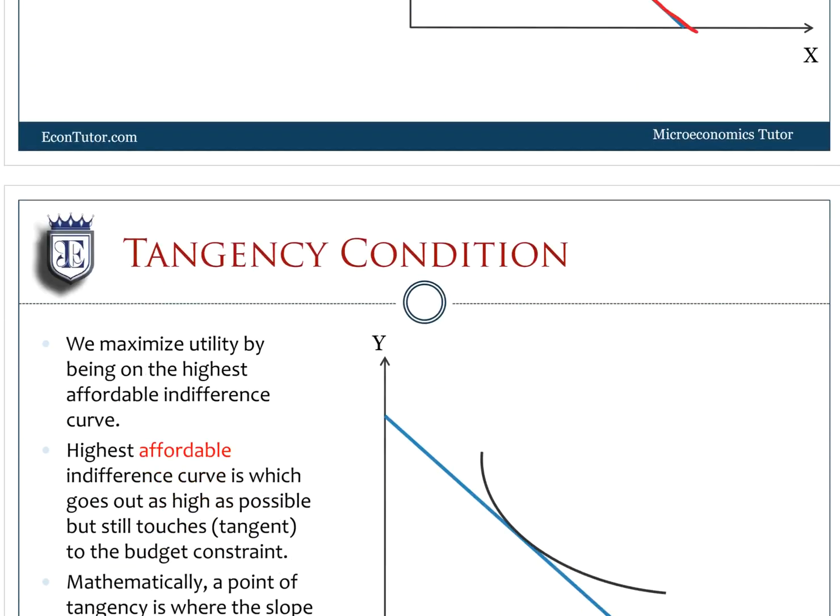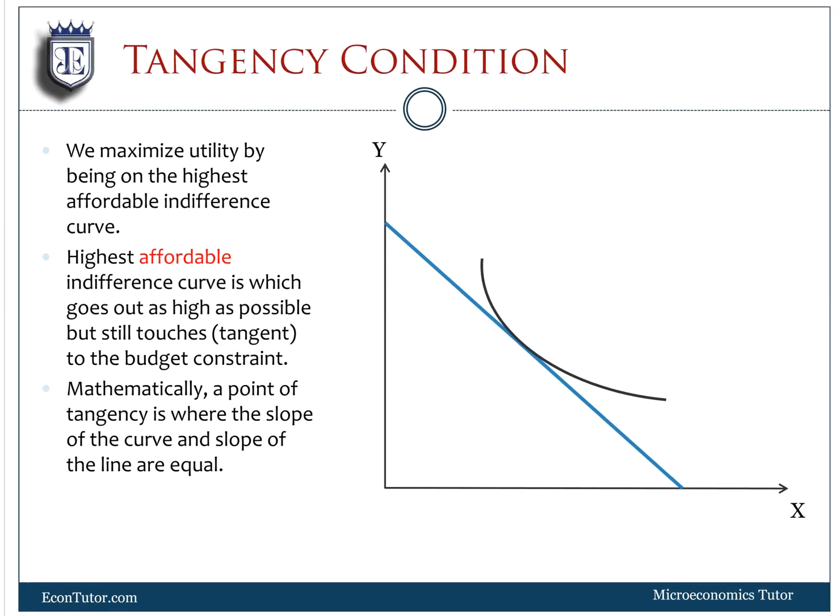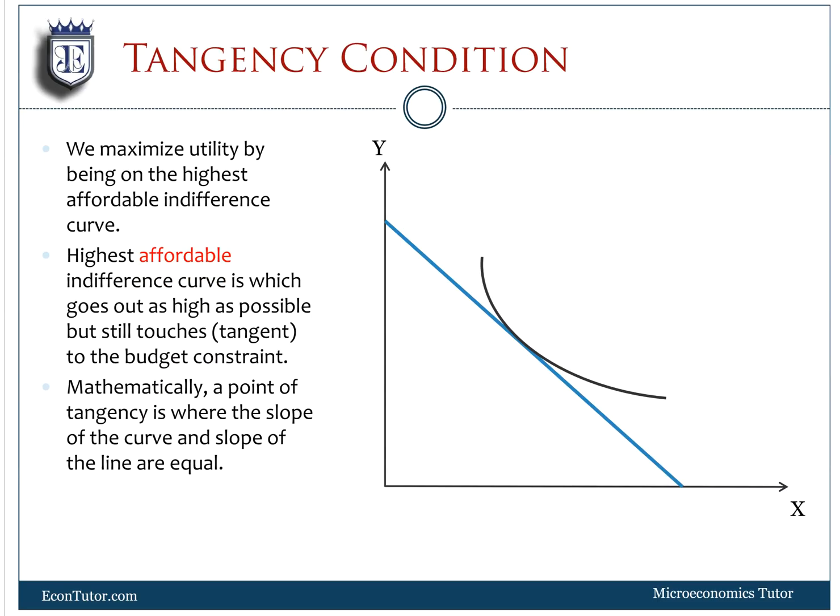This is the reason we move out as far as possible, which is when we're just touching the budget line. This becomes not affordable. This is affordable but it's not the highest. I can do slightly better than this. So we stop where the indifference curve is barely tangent to the budget line, and that's the maximum utility we can get.